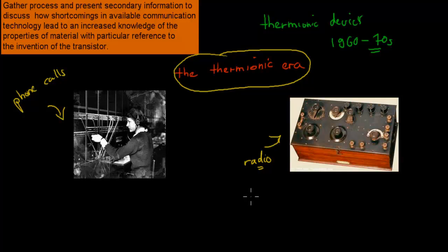That's what I have to talk about in this dot point. It says gather, process, and present secondary information to discuss how shortcomings in available communication technologies led to the increased knowledge of properties of materials with particular reference to the invention of the transistor. So we have to talk about the problems when it comes to communication technology, things like phone calls and radio.